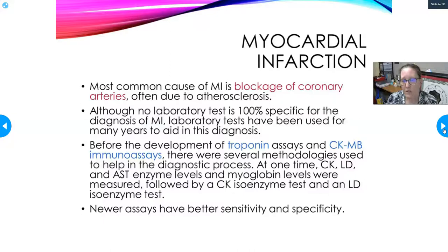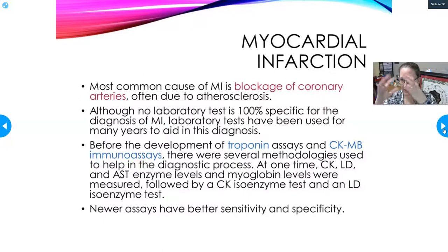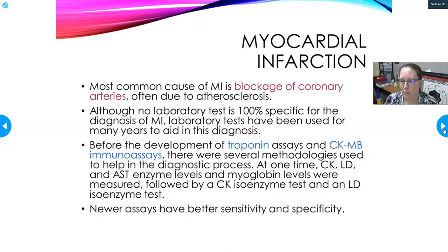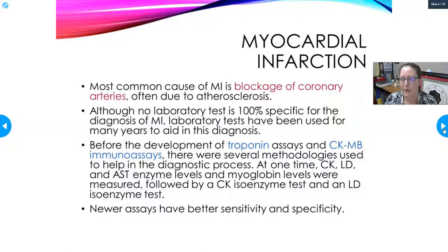The most common cause of myocardial infarction or heart attack is blockage of the coronary arteries. The coronary arteries are the first branches off the main aorta; they wrap back around the heart like a crown — which is where the word 'coronary' comes from — and feed the heart muscle. They supply the heart with oxygen, glucose, and fatty acids so it can produce ATP and continue beating.